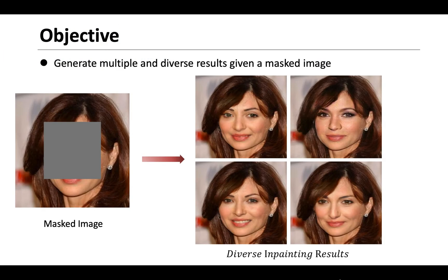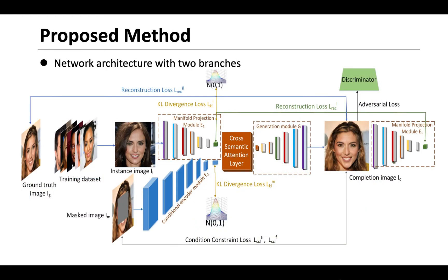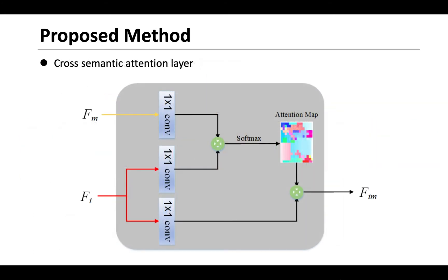In this work, we present an unsupervised cross-based translation generative adversarial network called UCTGAN, which mainly consists of three network modules: conditional encode module, manifold projection module, and generation module. We also introduce a new cross-semantic attached layer that explores the long-range dependence between the known path and the completed path.